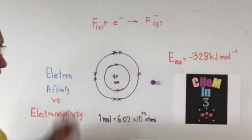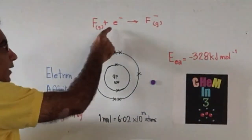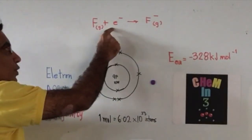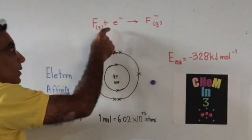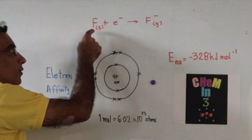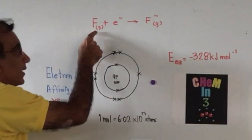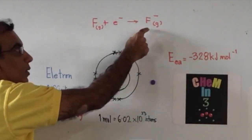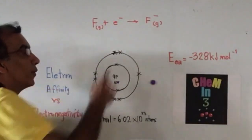By definition, the electron affinity is the amount of energy required to attach a mole of electrons to a mole of fluorine atoms in the gaseous state to produce one mole of fluoride ions.